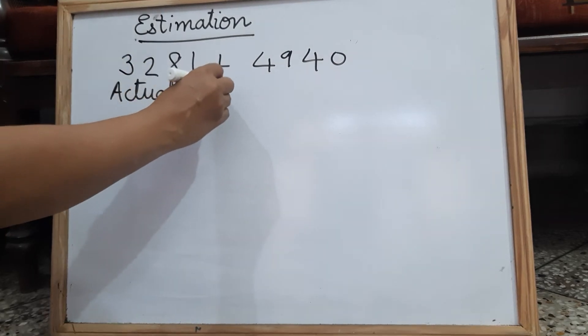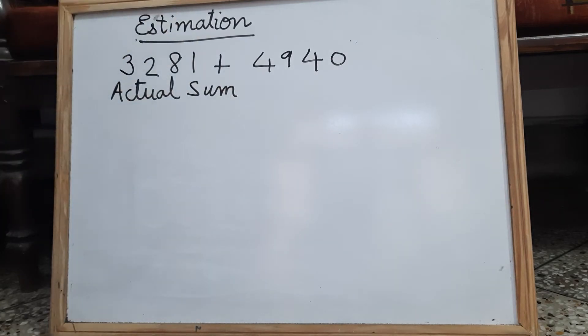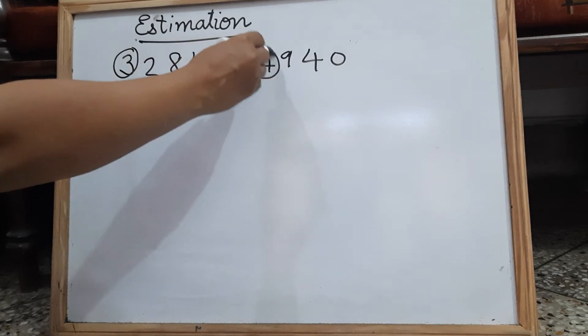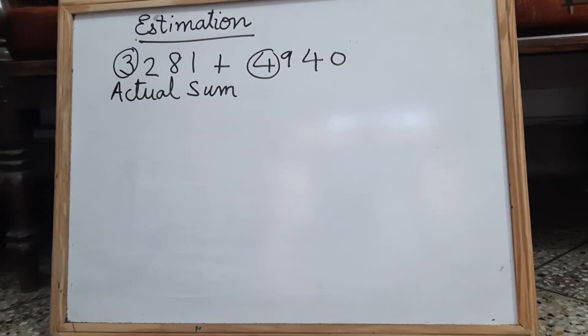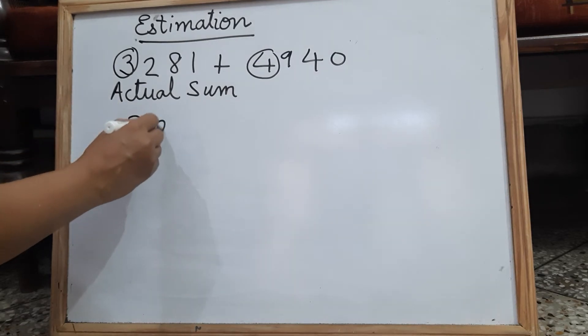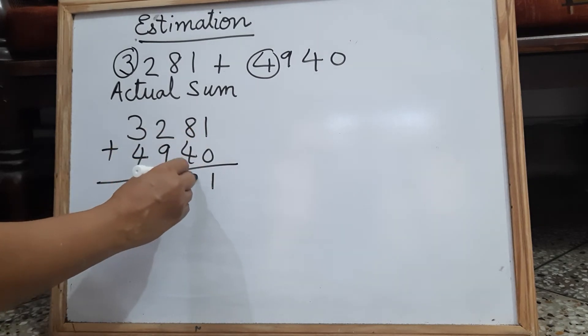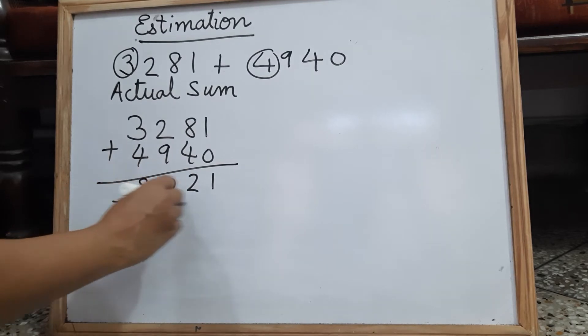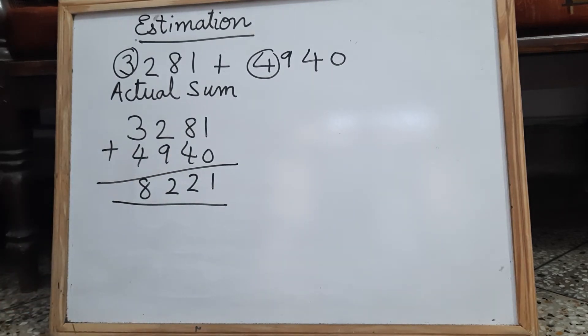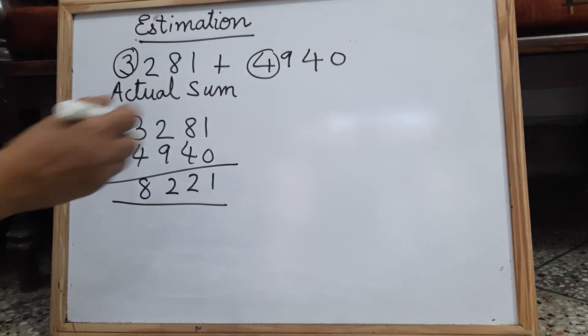Here we will round off to the nearest 1,000 place. So this is the 1,000 place and in this number 4 is in the 1,000 place. The actual sum of 3,281 and 4,940 is 8,221.